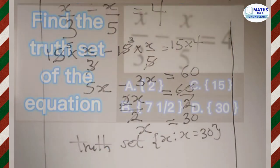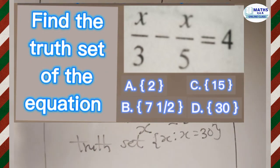Which of them do you think is the correct answer? We had x equal to 30, therefore the correct answer is D.